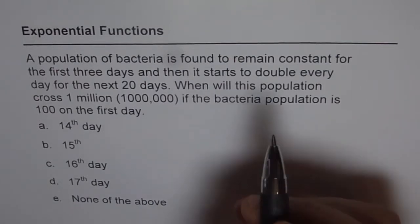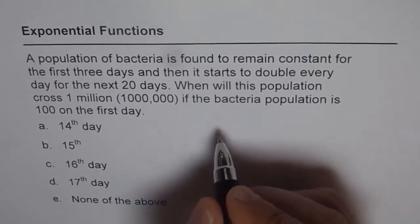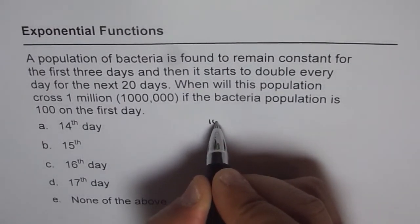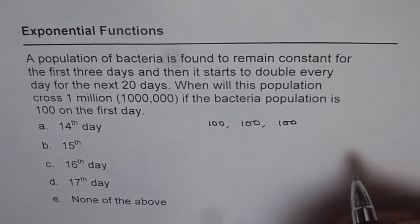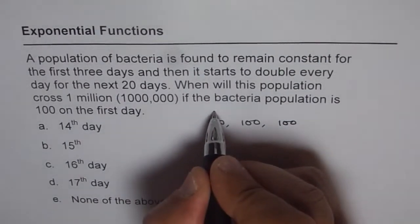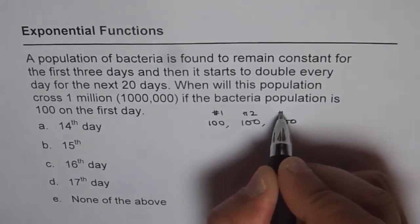Now, as the bacteria population remains the same for the first three days, that means on day one it is 100, on day two it is 100, and on day three also it is 100. So this is on day one, right? This is on day two and this is on day three.